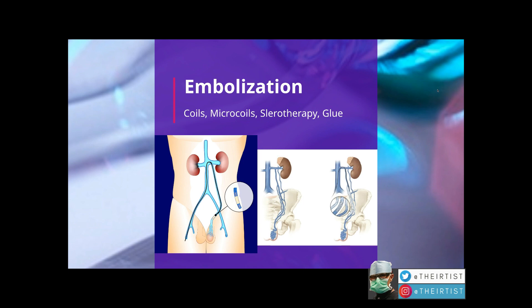You also have the technique of sclerotherapy, which is the local injection of a sclerosing agent that causes the vein to shrink. These techniques can be combined for better treatment — a coil can be placed and then either glue or sclerotherapy added on top of it. Glue is mainly used in countries where it's cheaper and can achieve occlusion of the vein.